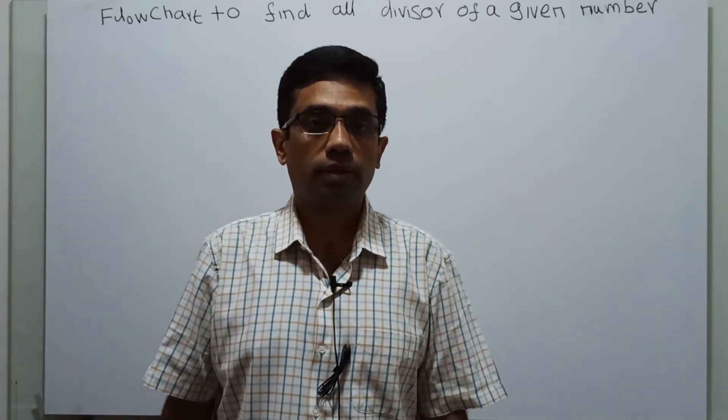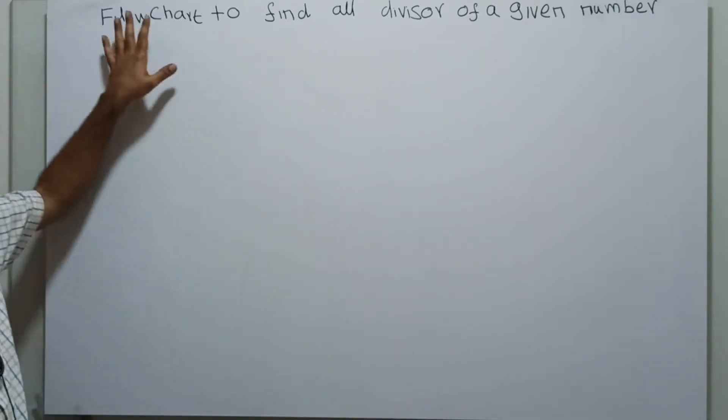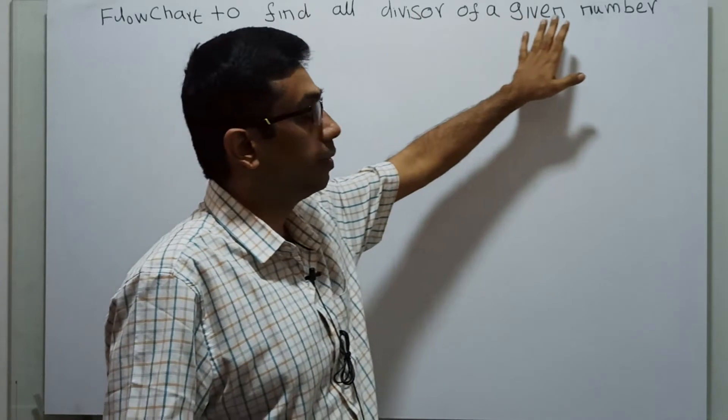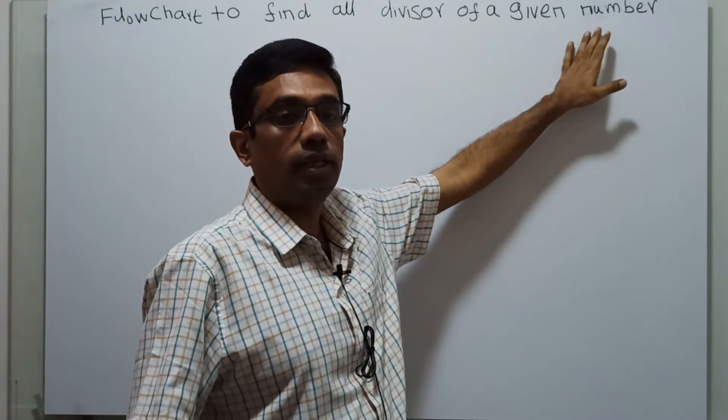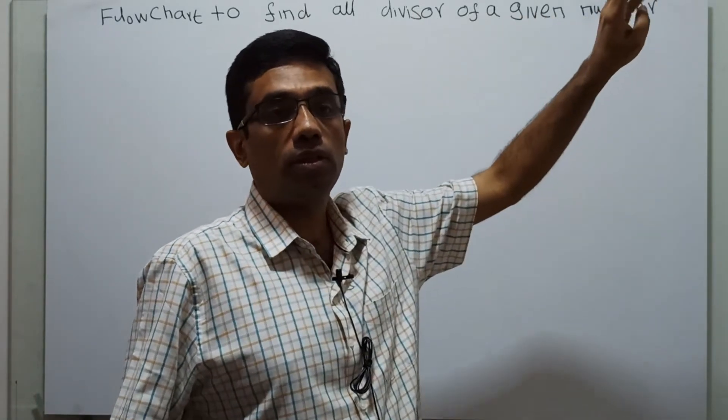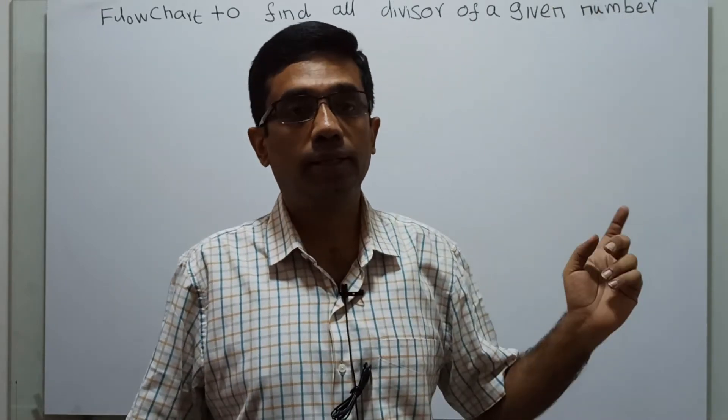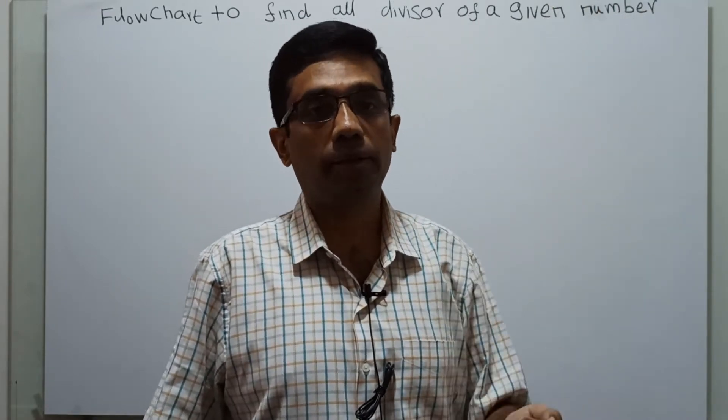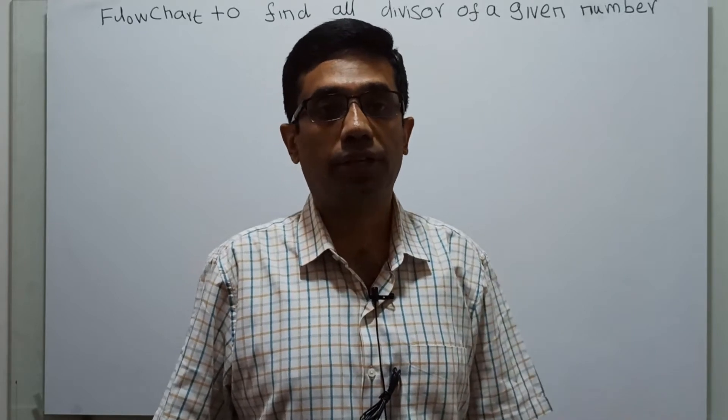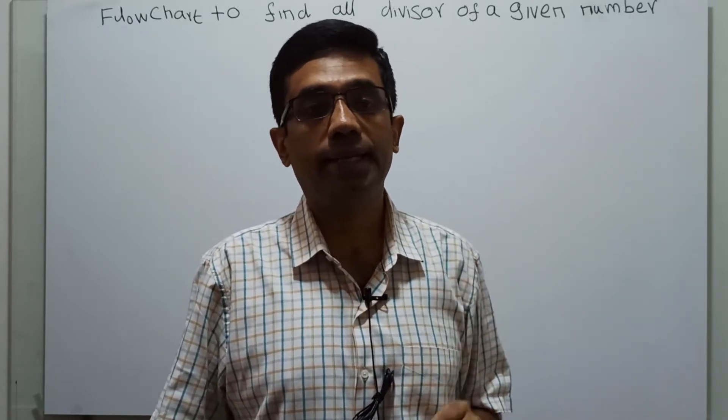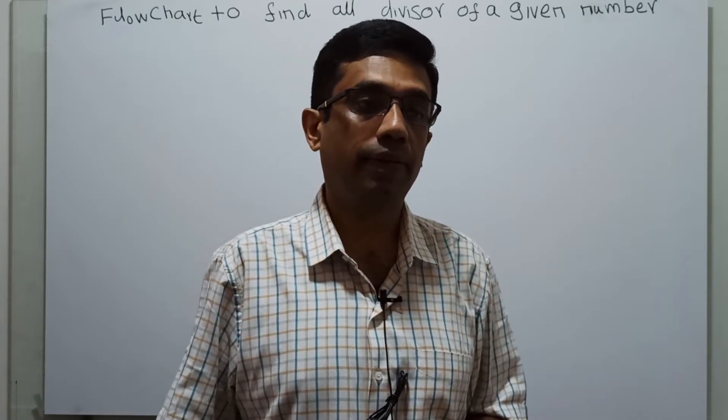Hi friends, we are going to draw a flowchart to find all divisors of a given number. If you take 6, 1, 2, and 3 are the divisors because they divide 6 completely by giving remainder as 0. Like this, if any number is given, we have to find the divisors of the given number.